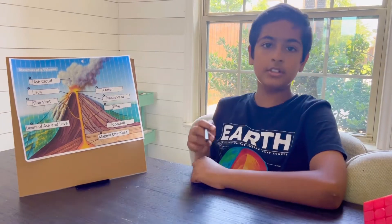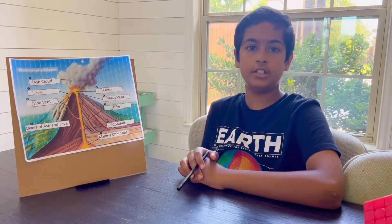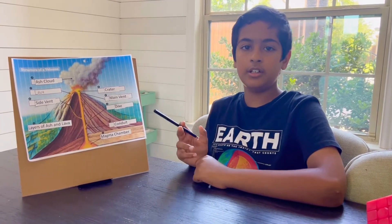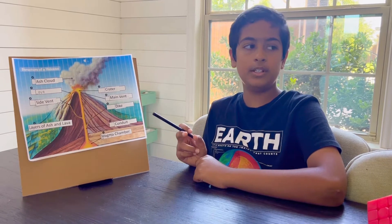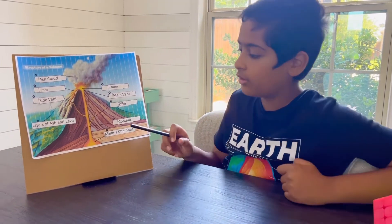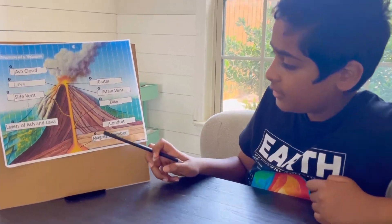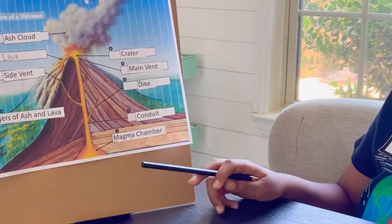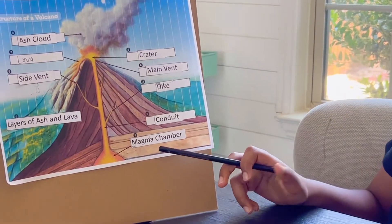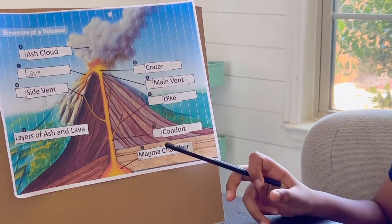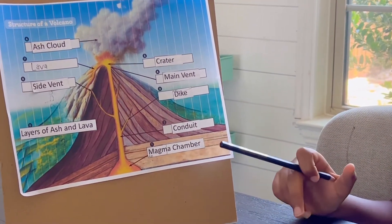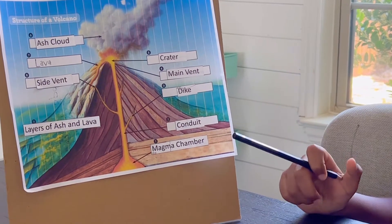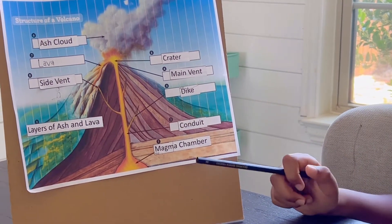Here is the picture of the volcanic structure, and here I am going to be explaining what is inside of it. The first thing is the magma chamber. Inside the magma chamber, there are all types of materials like lava and rocks and gases inside it.